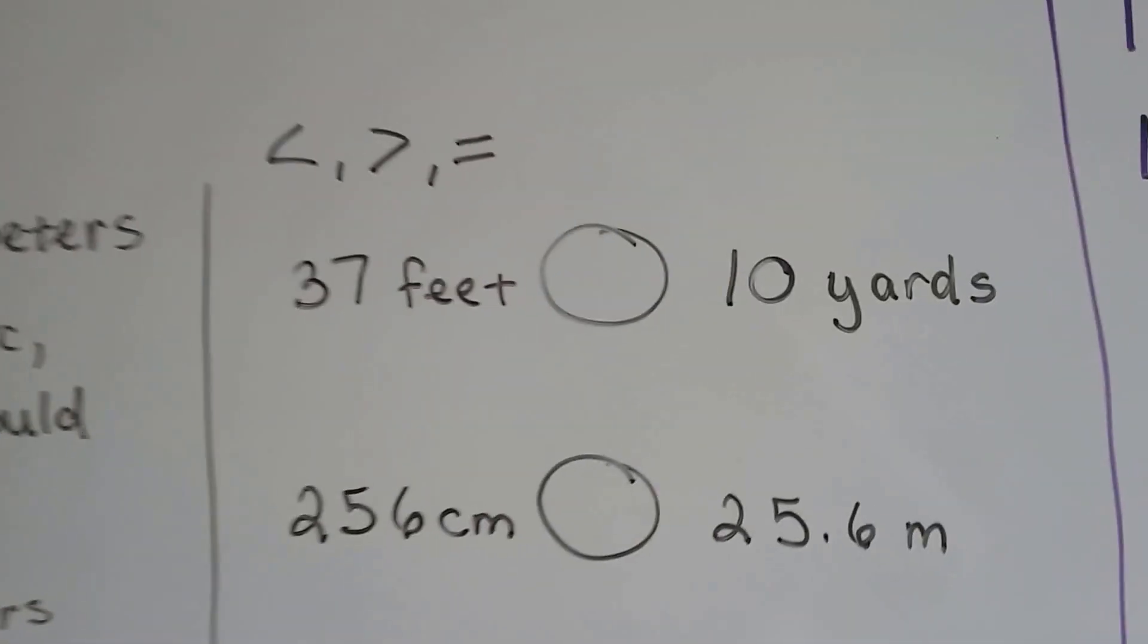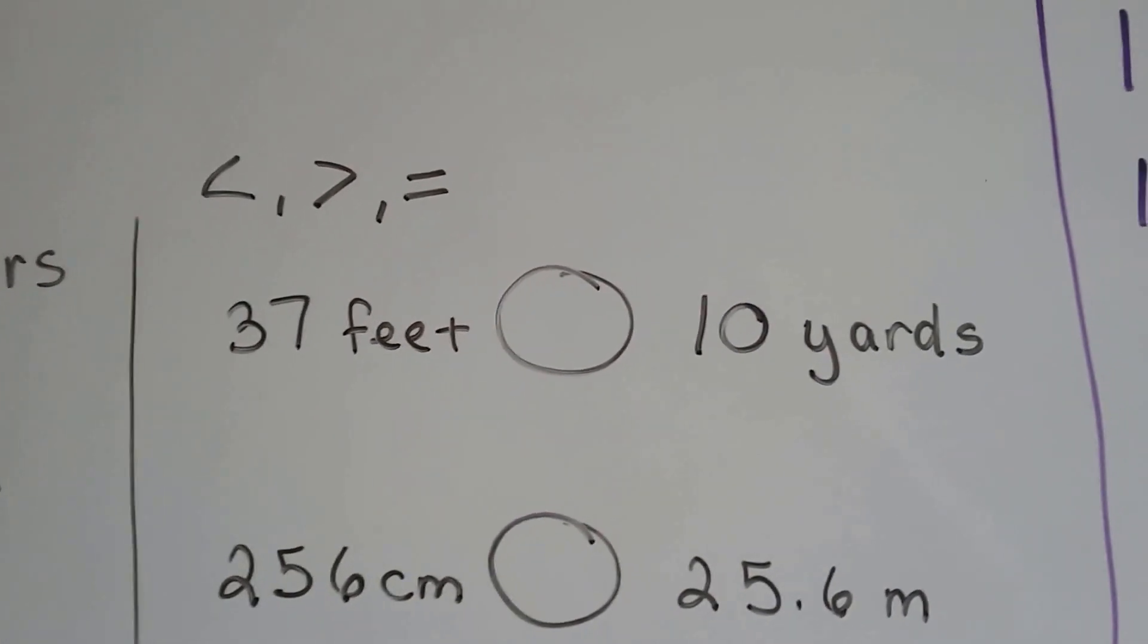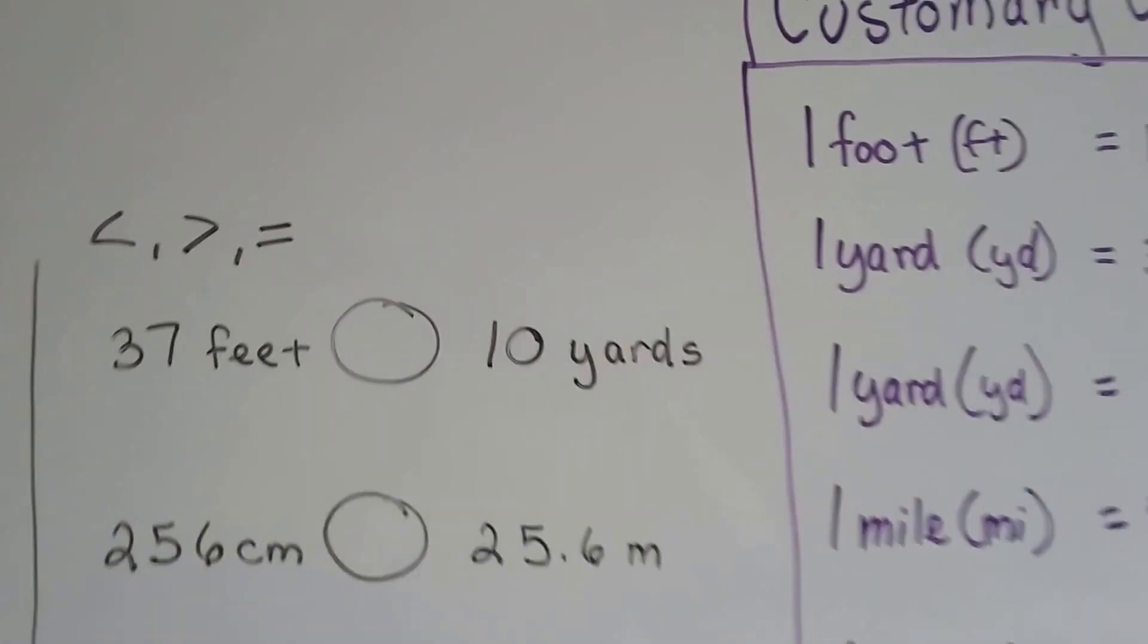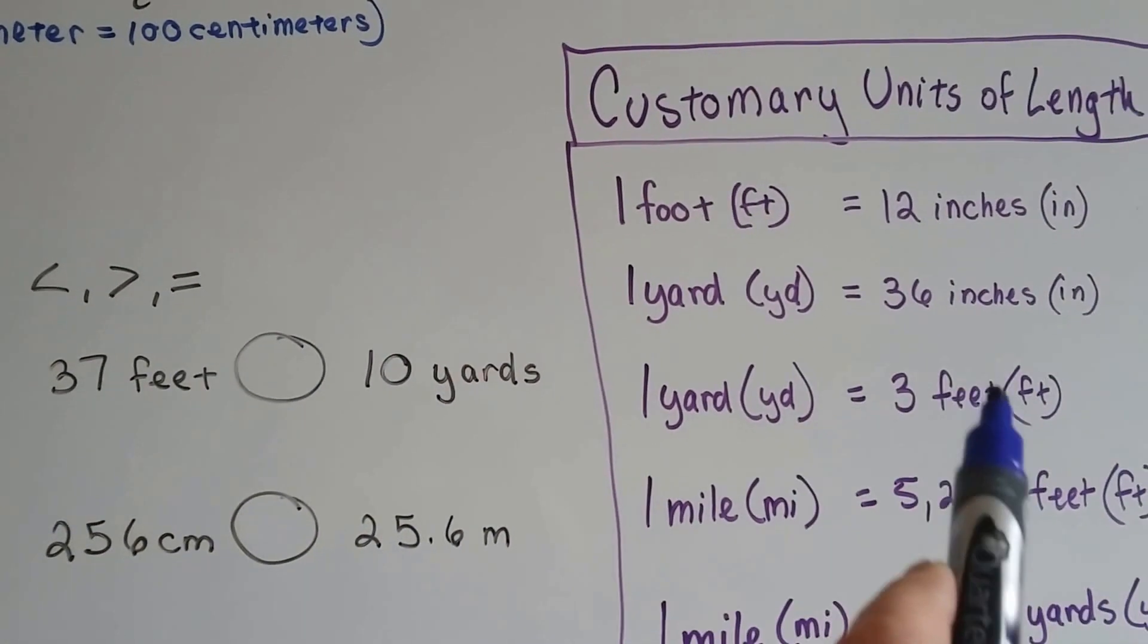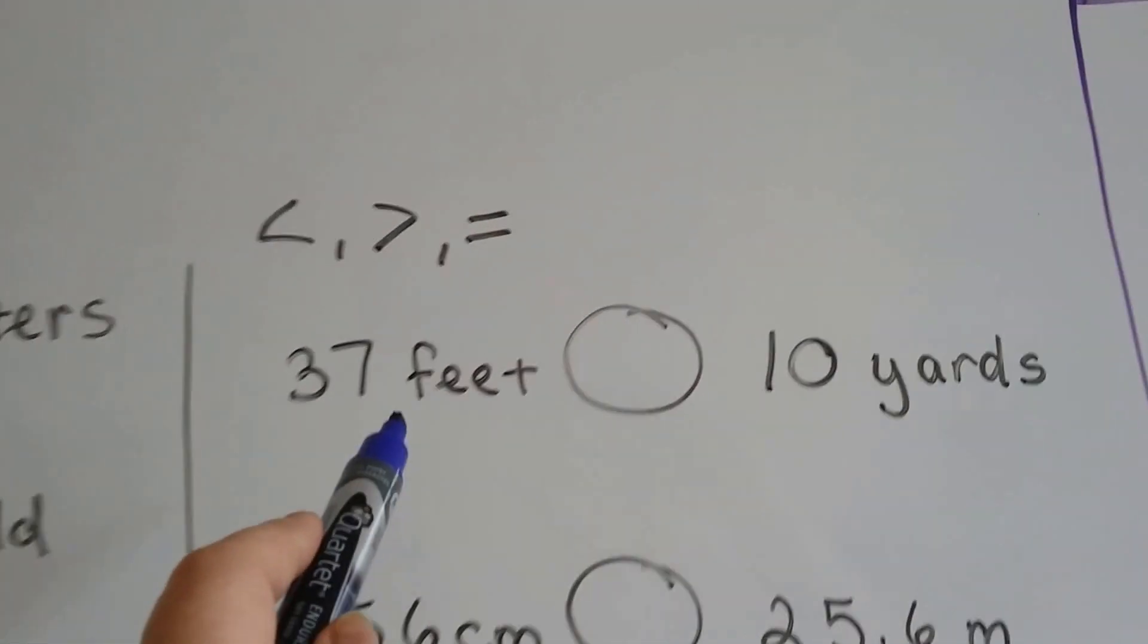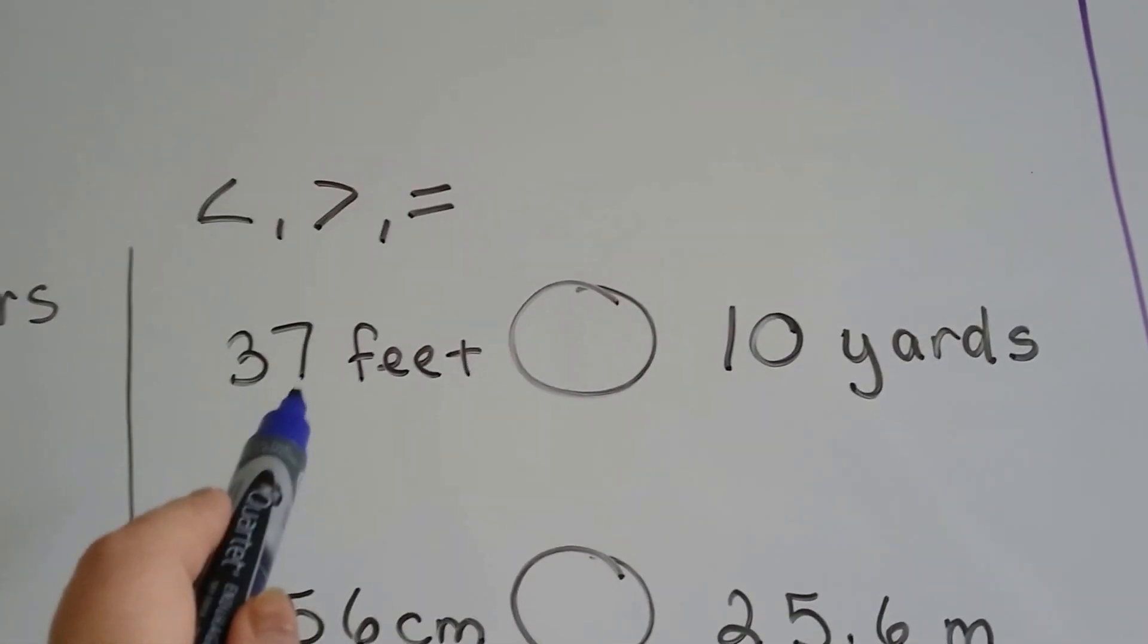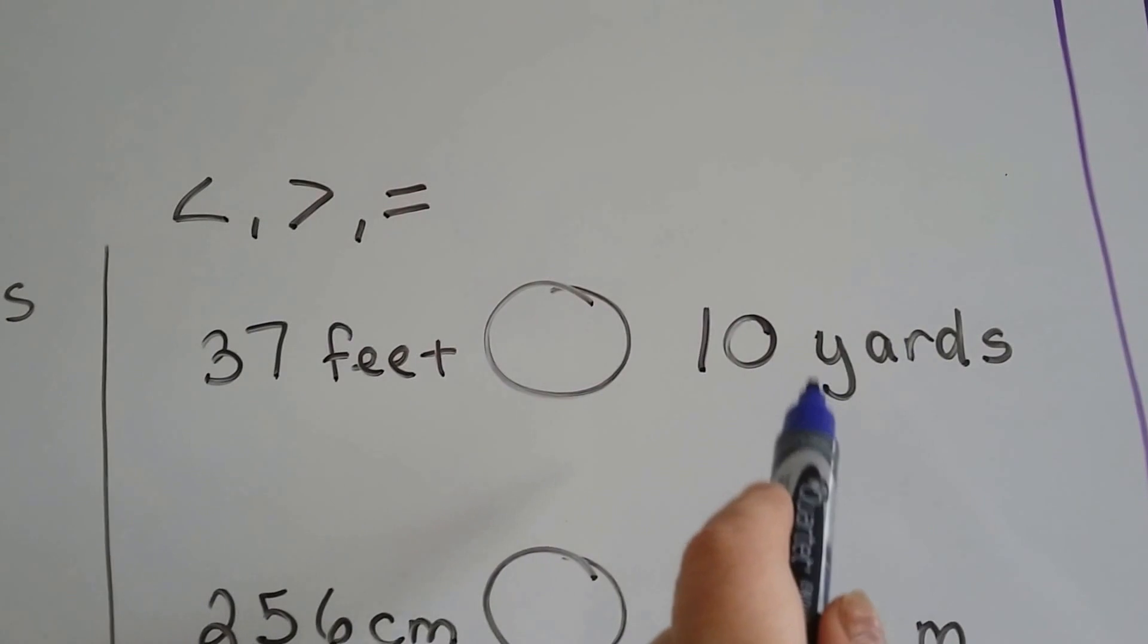Okay? So let's see if we could do this. If we had to do less than, greater than, and equal to, and we had 37 feet and 10 yards, well, we know that there's 3 feet in a yard. So what we would do is we would either divide this by 3 to find yards or multiply this by 3 to find feet.